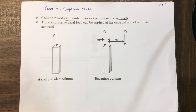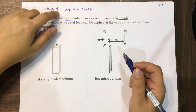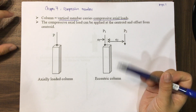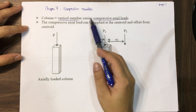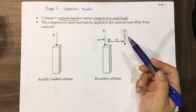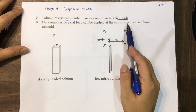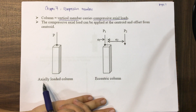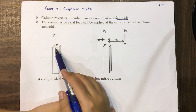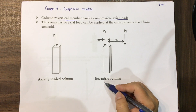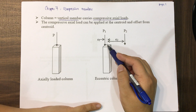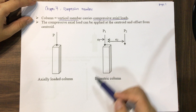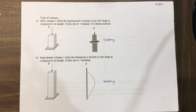Today we're going to learn about Chapter 7, which is compression members. A column is the compression member — it's also called a vertical member that carries the compressive axial load. The compressive axial load can be applied at the centroid, which is an axially loaded column, or offset from the centroid, which gives an eccentric column. In reality, there might be eccentricity due to some errors, so eccentric columns are more common.